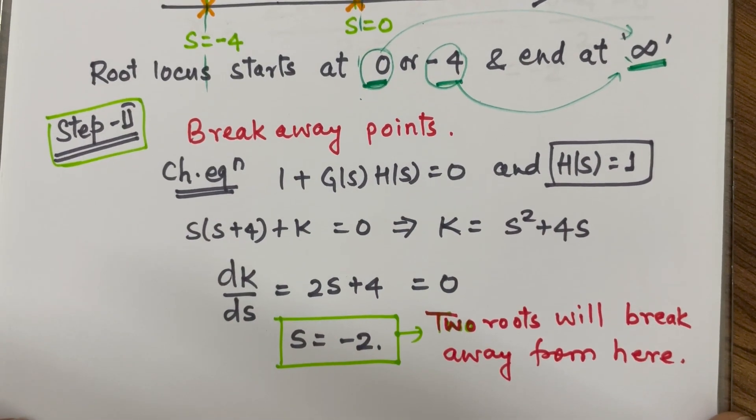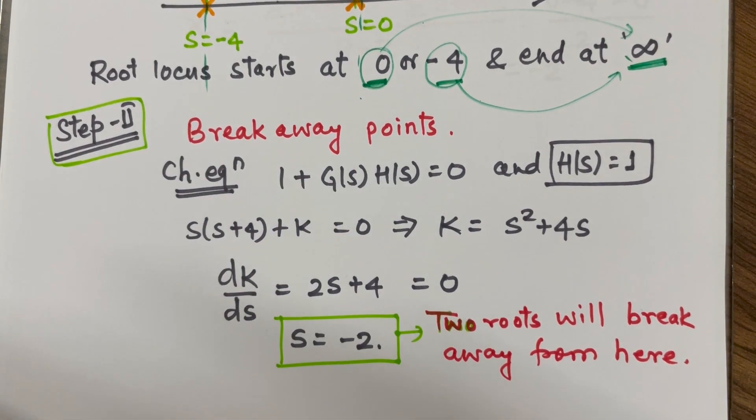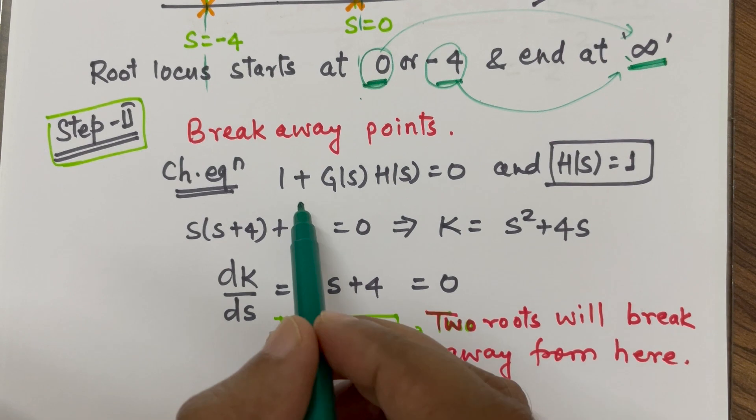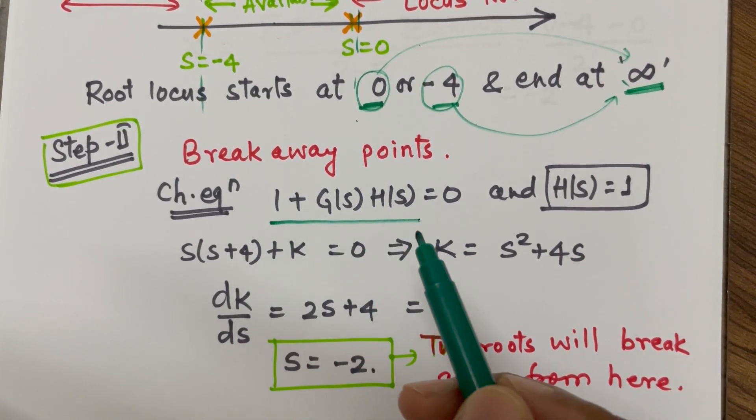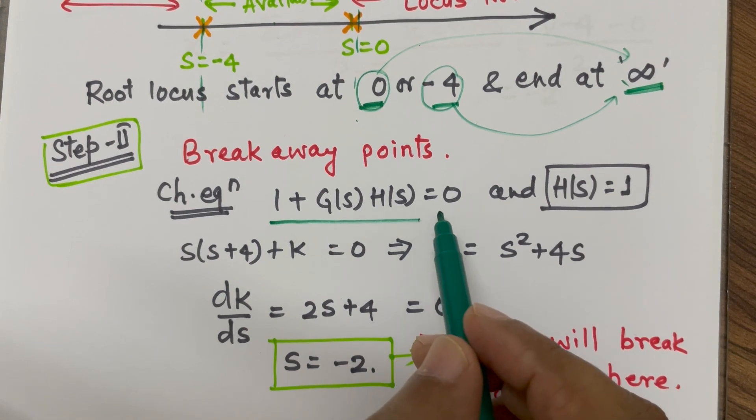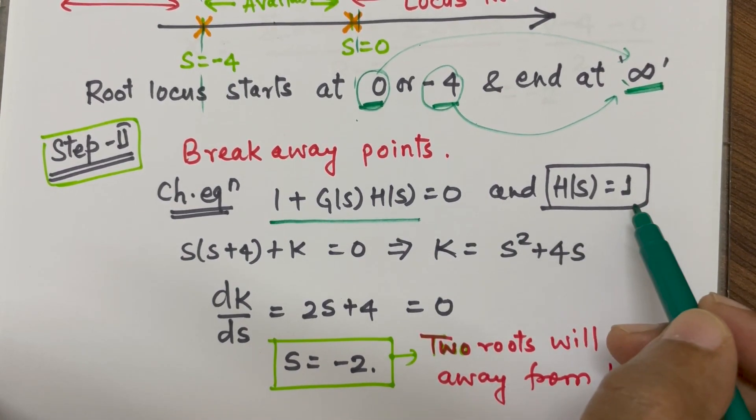Then, the second step comes for the calculation of breakaway points. For breakaway points, we have to write the characteristic equation and we know that characteristic equation is given by 1 plus G(s) into H(s) equal to 0. As H(s) equal to 1 for unity feedback,